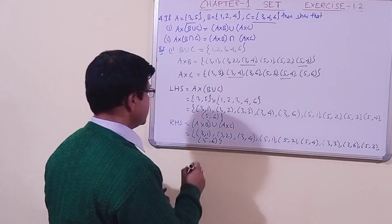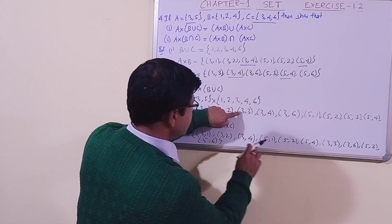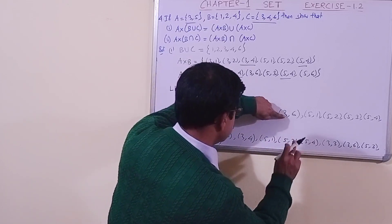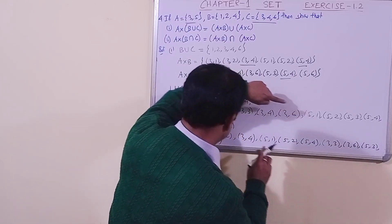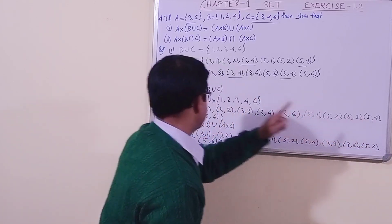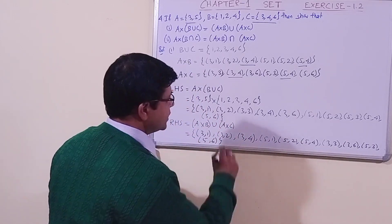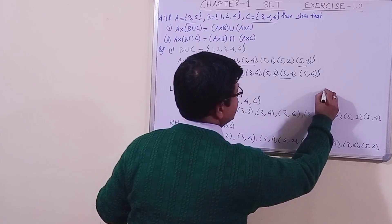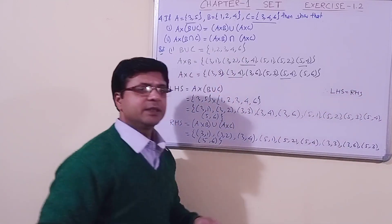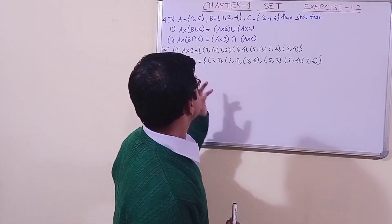Let us check: (3,1) is there, (3,2) is there, (3,3) is there, (3,4) is there, (3,6) is there, (5,1) is there, (5,3) is there, (5,4) is there, (5,6) is there. They are equal. Therefore, left-hand side equals right-hand side.